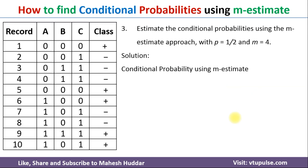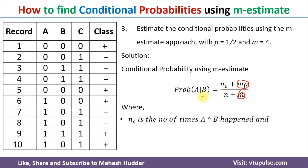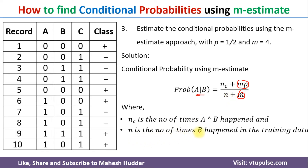In the M-estimate approach, we use the formula: probability of A given B equals (Nc + M×P) divided by (N + M). P and M are already given to us. Nc is the number of times both conditions occur — that is, both A and B. N is the number of times B has occurred — only the second condition.